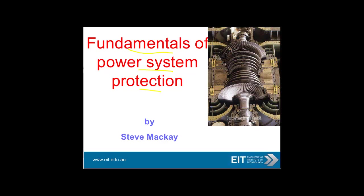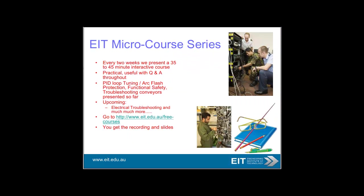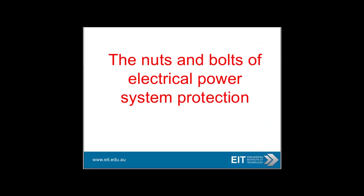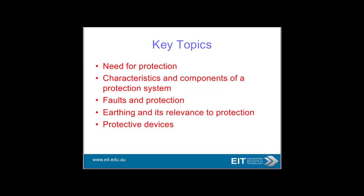This is a quick presentation on fundamental power system protection. We run these presentations every week covering some of the nuts and bolts of electrical power system protection. It consists of about 80 slides. I'm not going to go through every slide, but I am going to give you a quick rundown on some of the key elements. The topics we're going to cover are: need for protection, characteristics and components of the protection system, faults and protection, earthing, a quick discussion about protective devices, and some discussion about automation at the end.